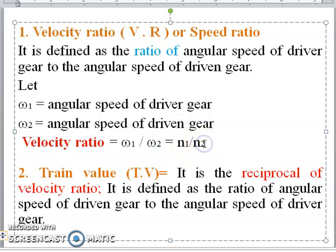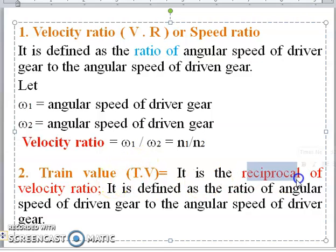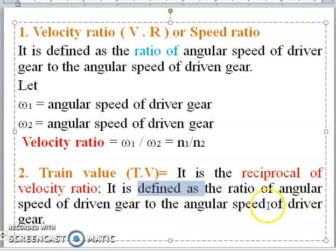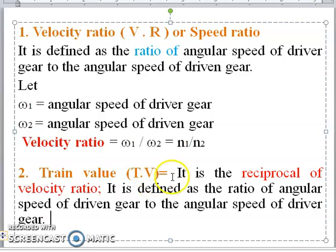The velocity ratio is omega 1 divided by omega 2, or equivalently n1 divided by n2, where n1 and n2 are the speeds of the driver gear and driven gear respectively. The second important concept is train value. The train value is the reciprocal of the velocity ratio. It is defined as the angular speed of the driven gear to the angular speed of the driver gear: TV = omega 2 / omega 1 = n2 / n1.